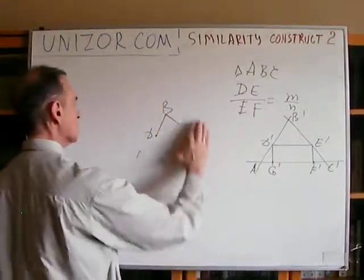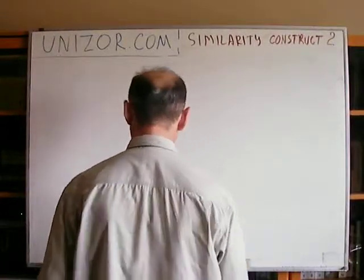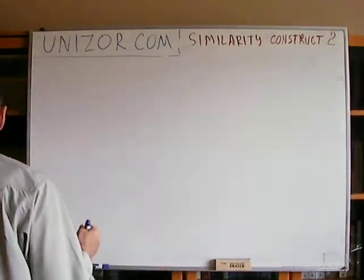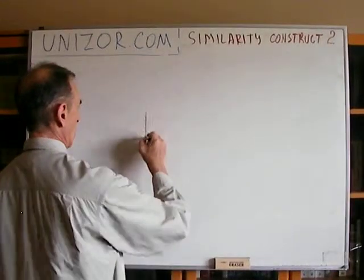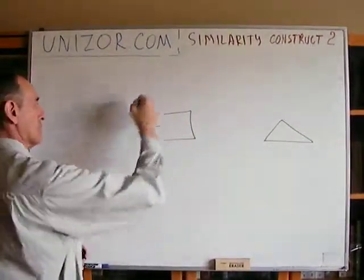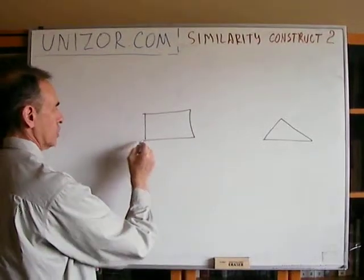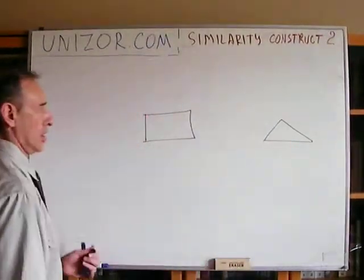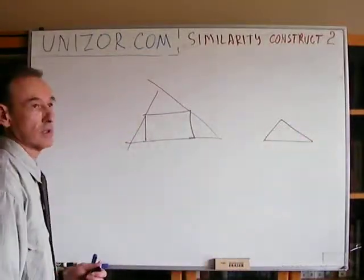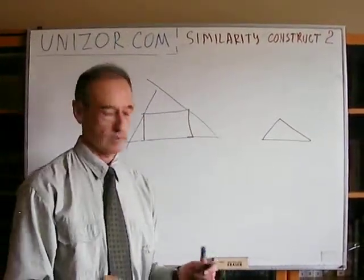The last problem is the opposite: construct a triangle similar to a given one that circumscribes a given rectangle. The approach is exactly the same as with the square — align the base of the triangle with one side of the rectangle, then draw lines parallel to the other two sides of the given triangle. The resulting triangle is similar and circumscribes the rectangle.